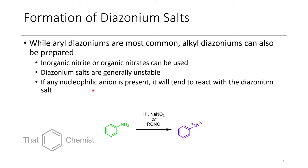And so if you have a nucleophilic anion present, anything around the nucleophilicity of chloride or more nucleophilic than chloride, then you'll start getting the reaction occurring. So if you want to form these and isolate them, it's better to use HBF4 as your acid so that tetrafluoroborate is your counterion, and those tend to be relatively stable.